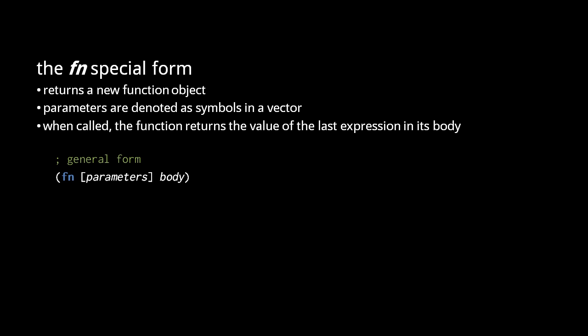Clojure has no equivalent of a return statement. Instead, a function call always implicitly returns the value of the last expression executed. When the fn form is evaluated, the body expressions get evaluated along with it, but the body expressions are not immediately executed, because, of course, a function body should only run when the function is invoked, not when it is created.